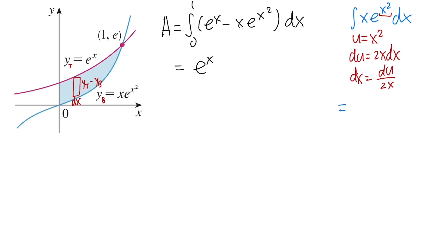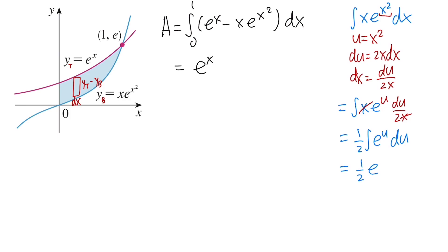Taking the integral to the u world: we have x times e to the u times du over 2x. The x's cancel, leaving a factor of 1/2. Integrating e to the u du in the u world gives e to the u. Since u is x squared, substituting back gives 1/2 e to the x squared. So the integral of x·e^(x²) is 1/2 e^(x²).